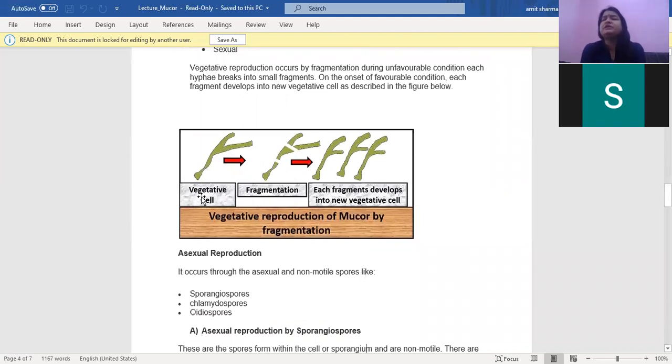The vegetative reproduction is simple and usually occurs during unfavorable condition by the process of fragmentation. You can clearly see in this diagram, this is a vegetative cell of MUCR. It has divided into many parts and each part, divided into one, two, and three parts, and each part has grown into a new vegetative cell.